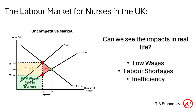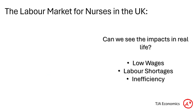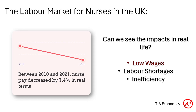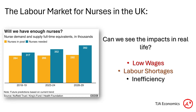So do we actually see these in real life? I would argue we can. On low wages: between 2010 and 2021, nurse pay in the UK fell by 7.4% in real terms — so yes, wages are being pushed much lower. On labour shortages: in 2018-19 there were roughly 30,000 vacancies in the nursing sector, and that's only set to rise over the next five to ten years — so yes, we do see labour shortages.